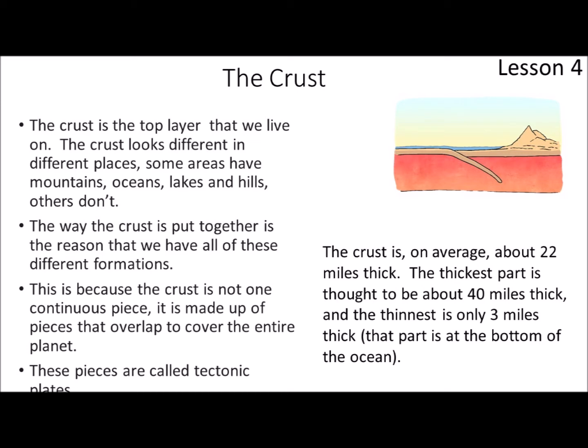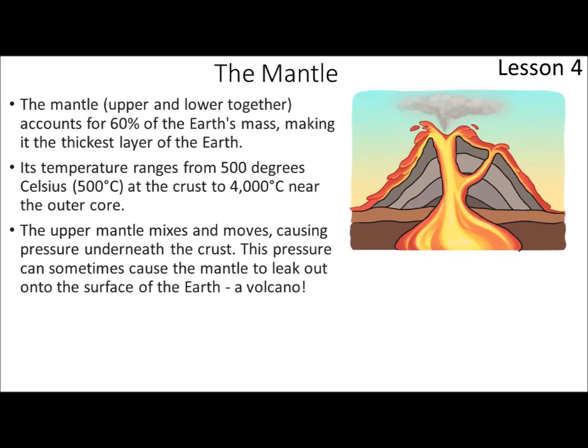Moving along, the next layer inside the earth is the mantle. We know from our video that there is an upper and a lower mantle and sometimes they're referred to as two separate layers, although here we've got them together. They account for about 60% of the earth's mass, making it the thickest layer of earth. Temperature ranges from 500 degrees at the crust to 4,000 degrees near the outer core. The upper mantle mixes and moves, causing pressure underneath the crust, and this is what causes those plates to move.